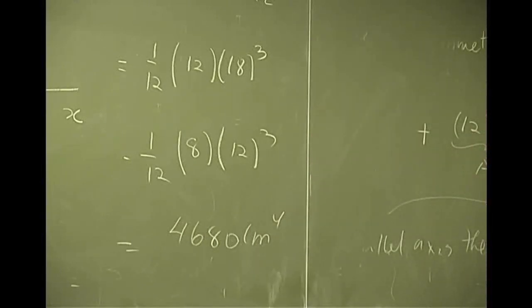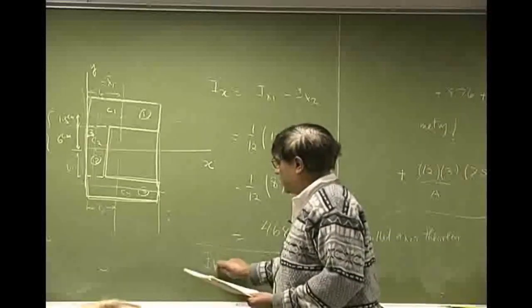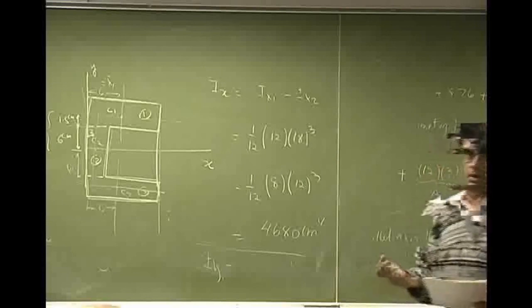Instead of going through 1 plus 2 plus 3, you can just do it in this way. But when you try for Iy, try using the same method for Iy, then it won't work.